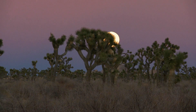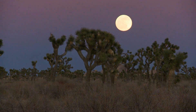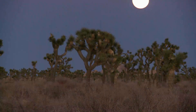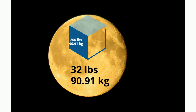Your weight can change based on the gravitational pull — your weight varies on the moon and other planets, but your mass remains the same. If a cube has a mass of 90.91 kilograms and a weight of 200 pounds on earth, it will weigh 32 pounds on the moon, but still has a mass of 90.91 kilograms.